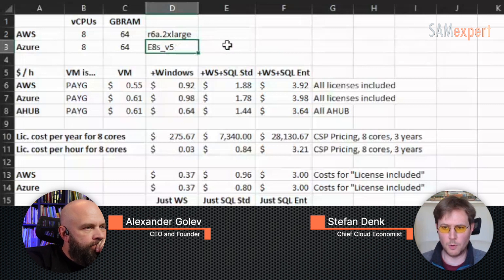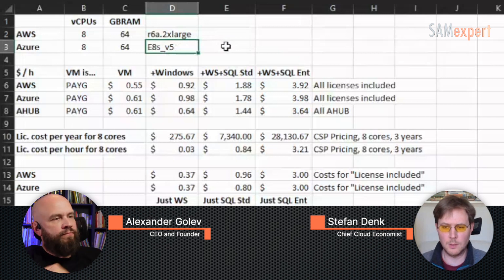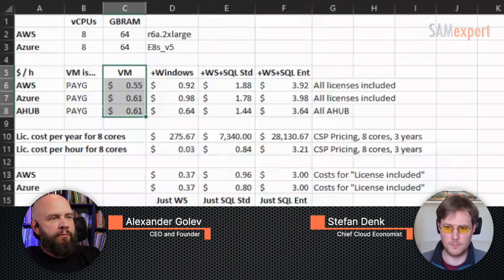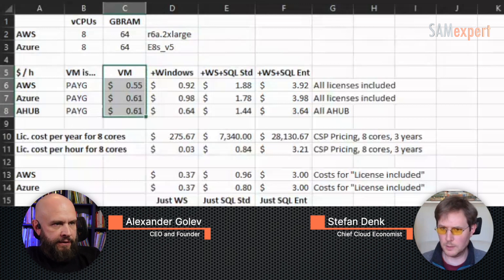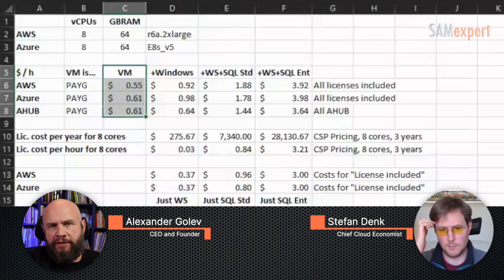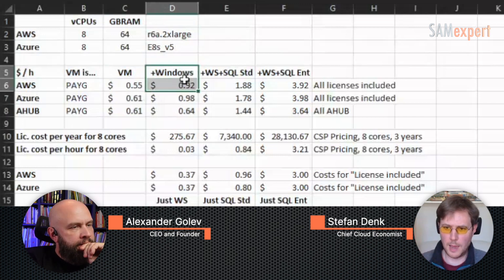I started comparing costs by looking at the different options available on both the AWS and Azure calculators. First, you can simply rent a VM without any operating system charges — like when you put a CentOS or Ubuntu Linux on top. That is the cost of a pure VM without licenses, no hard disks, no network egress, none of the small costs cloud providers like to attach. This is the pure cost of eight vCPUs and 64 gigabytes of RAM in a virtual machine, equivalent to a Linux machine.